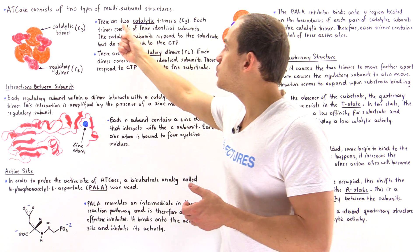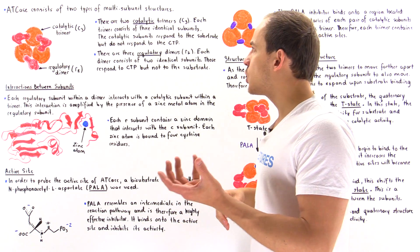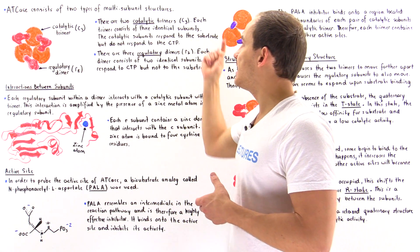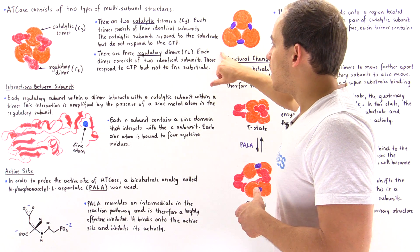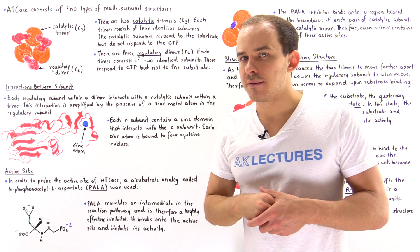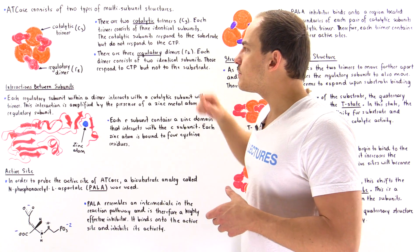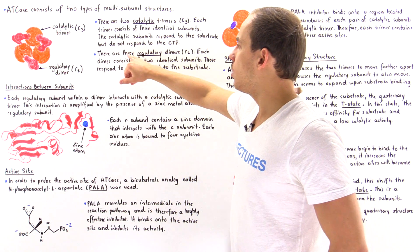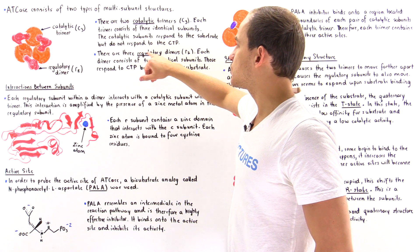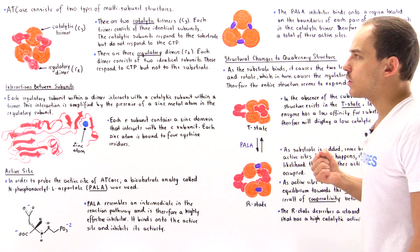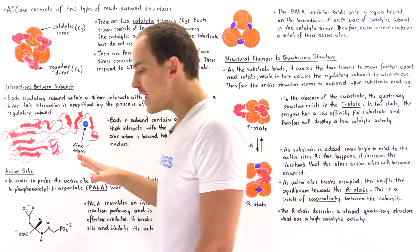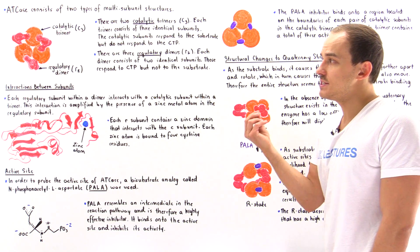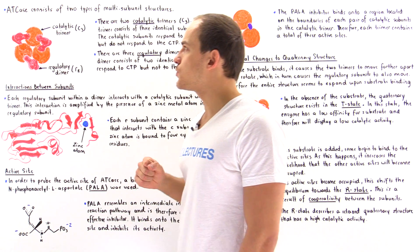We actually have two of these catalytic trimers, giving us a total of two times three — six individual catalytic chains. On the other hand, we have three regulatory dimers, and each dimer consists of two identical regulatory chains, so three times two gives us six regulatory chains. So we have six catalytic chains and six regulatory chains.